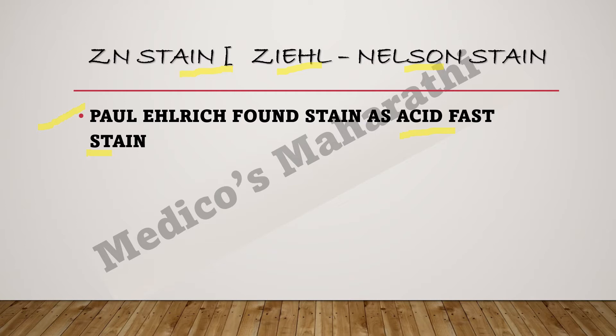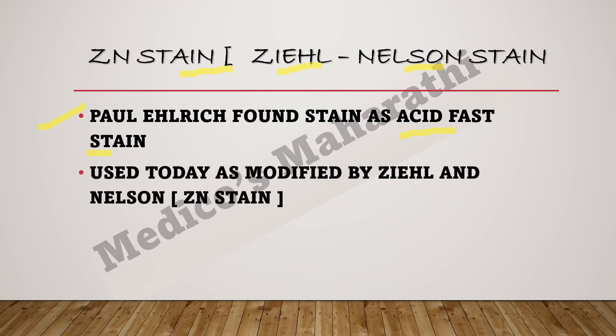Paul Ehrlich found this stain during his examination of tubercle, and he named it acid fast stain. Today we are using it in a modified form, modified by Ziehl and Nelson, so we say it as Ziehl-Neelsen stain or Ziehl-Nelson acid fast stain.